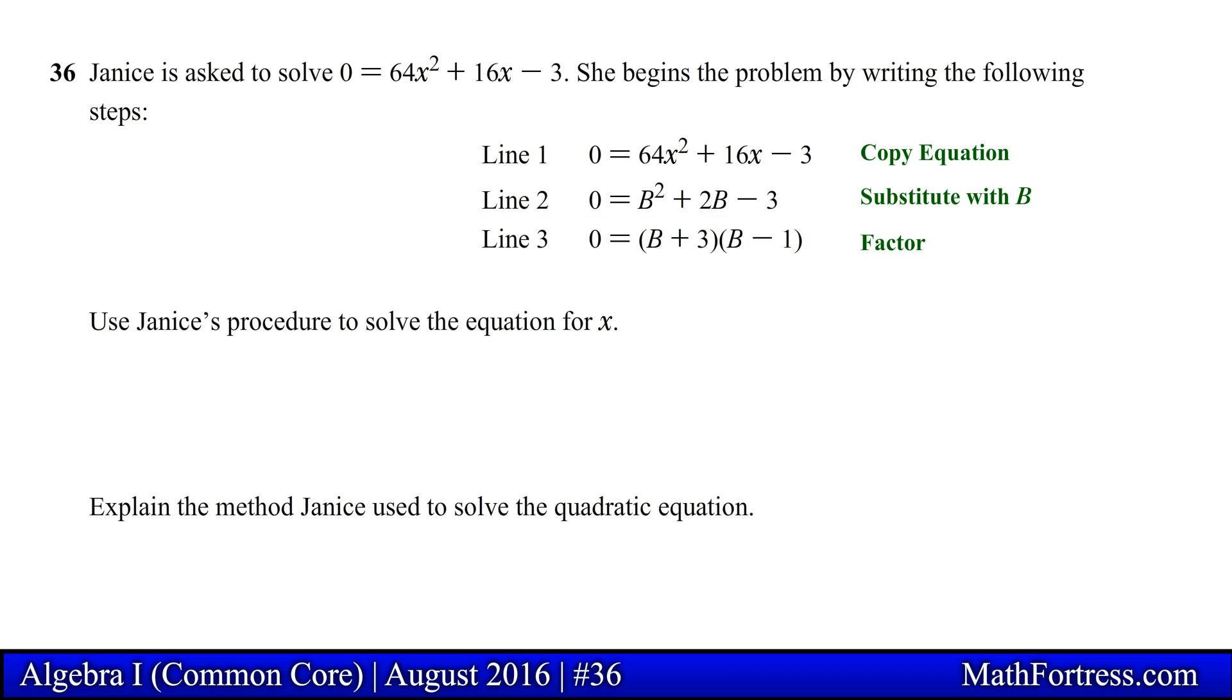The next step would be to use the zero product property and set each factor equal to 0. In this case we set the quantity b plus 3 equal to 0 and the quantity b minus 1 equal to 0. We then solve for b in both of these linear equations. Doing that we obtain the following.